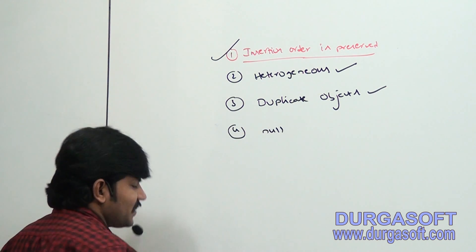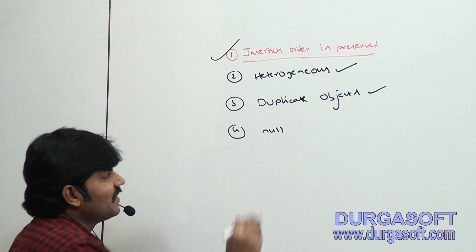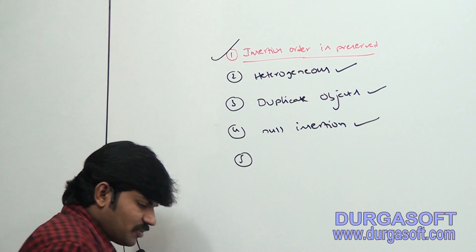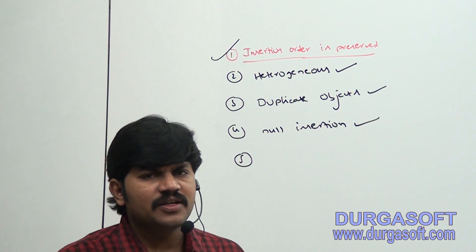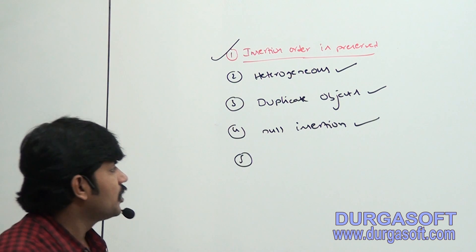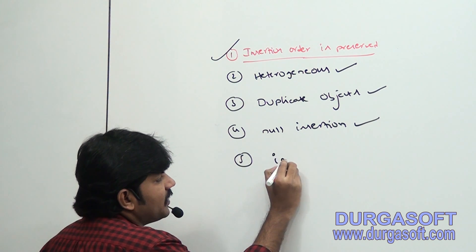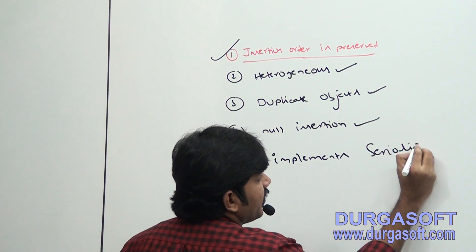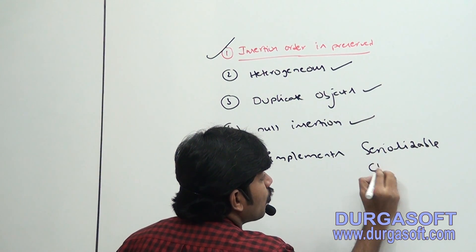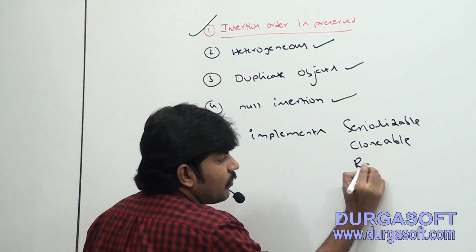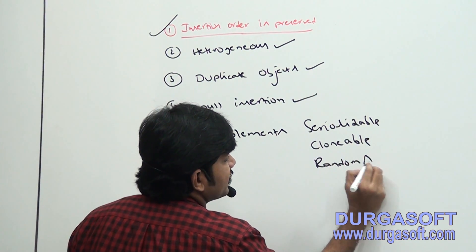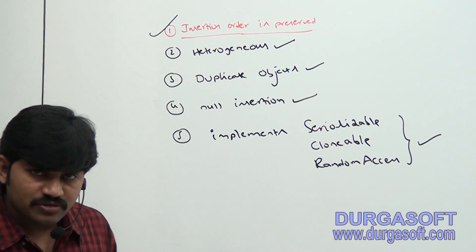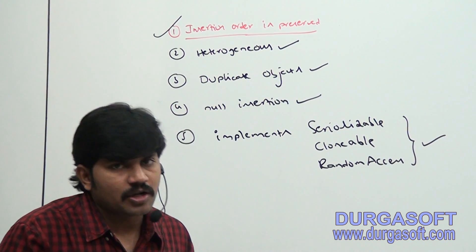Next, null insertion — is it possible? Yes, happily you can insert null, null insertion is possible. Next, ArrayList implements which interfaces? Serializable, Clonable, and RandomAccess — these three interfaces are also implemented by CopyOnWriteArrayList.